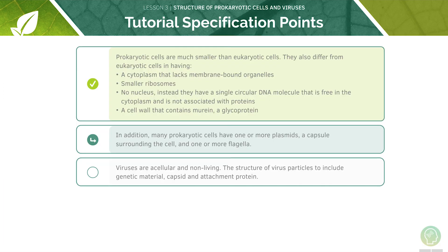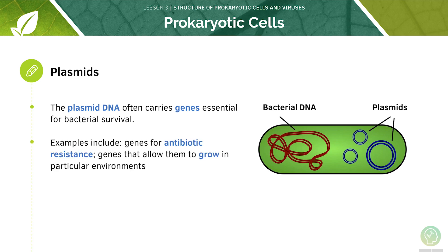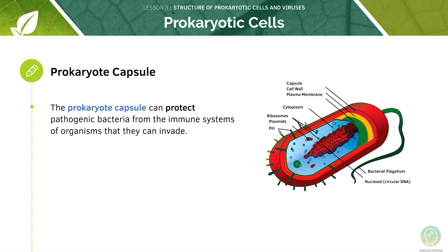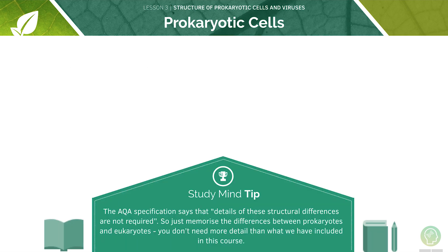Now let's look at our next specification point covering plasmids in prokaryotic cells. The plasmid DNA often carries genes which are essential for bacterial survival. Examples include the genes for antibiotic resistance and the genes that allow them to grow in particular environments. The capsule can protect pathogenic bacteria from the immune systems of the organisms they invade, helping them to evade the immune system and go undetected. Just memorize the differences between prokaryotes and eukaryotes — you won't need more detail than what we've included in this video.